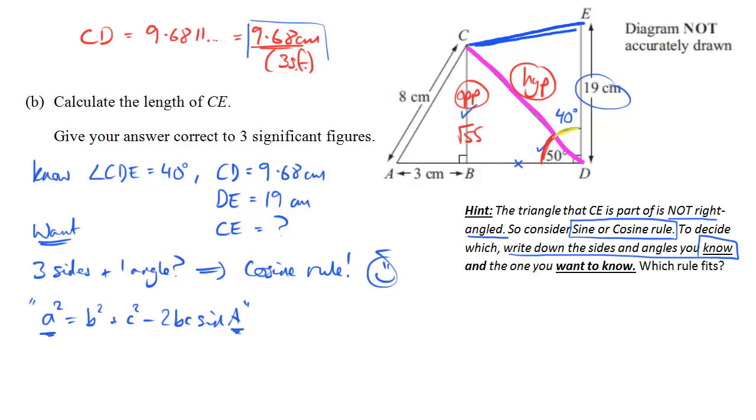And the thing to bear in mind here is that the side that's on its own, A in this case, is the one that's opposite the angle that you're using. Okay, so looking at our diagram, the angle measured there is 40 degrees. The side that's opposite that is CE. That's the one that we want. So CE appears on its own. We have one on the sides squared. So we'll start with CD, which is 9.6811 squared. The other side squared, which is 19 squared minus two times 9.6811. I'm just putting the whole value in there times 19 times. Okay. Oops, my mistake.